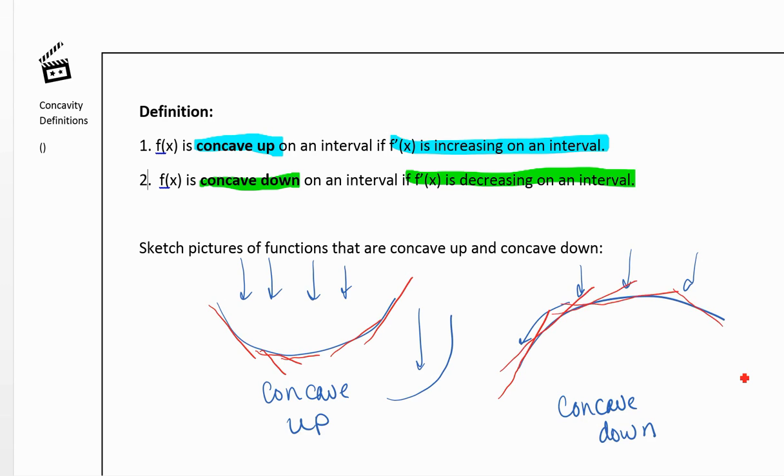Now, we talked previously about how to find when a function is increasing or decreasing. We said it's increasing when the derivative is positive and decreasing when the derivative is negative. Well, now we need to talk about the derivative of the derivative, which is the second derivative.